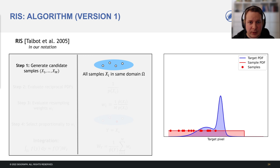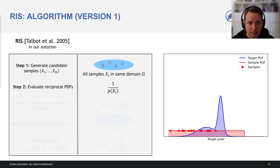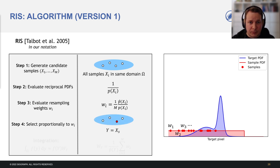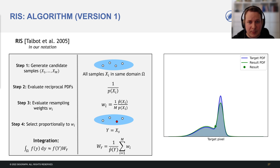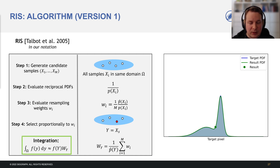We start by generating samples with a non-PDF. We evaluate the reciprocal PDFs of the samples, the target functions p-hat, and give each sample a resampling weight. We then select the output sample proportionally to the resampling weights. If we add more input samples, the result PDF approaches the target PDF. While we have no access to the result's exact PDF, the contribution weight allows unbiased integration.